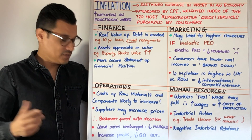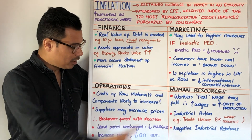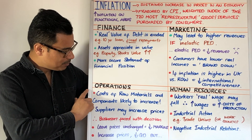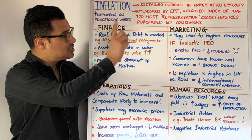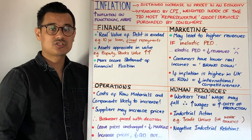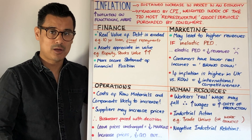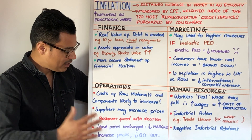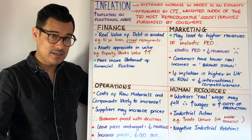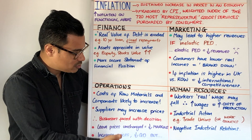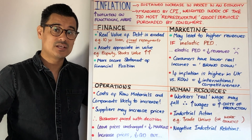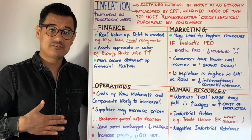Next, looking at the operations department, where we've probably seen more negative impacts. If prices are going up in the economy and you've got inflation, it's likely the costs of raw materials, components, and supplies that you buy are going to increase. And if they increase, your suppliers are likely to increase their prices.